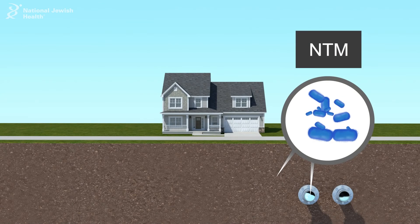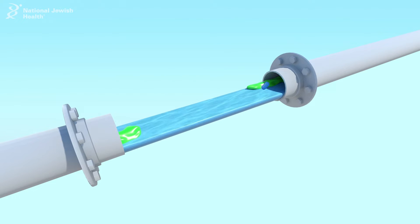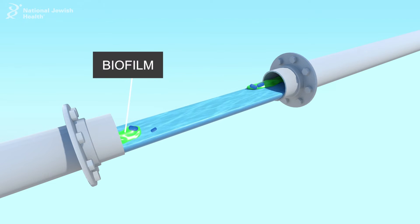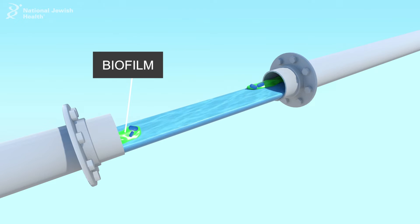NTM are a ubiquitous, opportunistic, and diverse group of environmental mycobacteria that are natural inhabitants of soils and water. NTM have the ability to attach to pipe surfaces in municipal water systems and household plumbing and form biofilms that prevent them from being washed out of municipal drinking water systems.